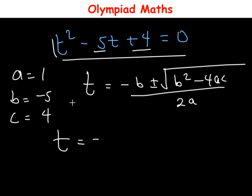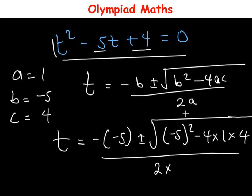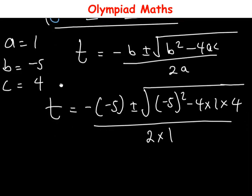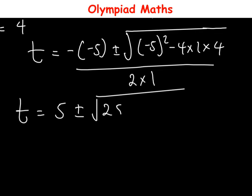Substituting the values of a, b, and c into the formula: t = [−(−5) ± √((−5)² − 4×1×4)] / (2×1). This simplifies to t = [5 ± √(25 − 16)] / 2.